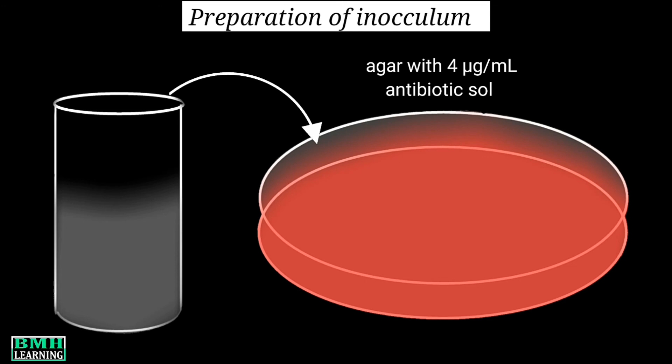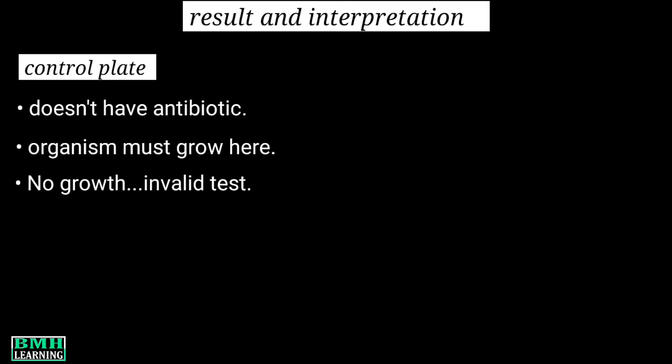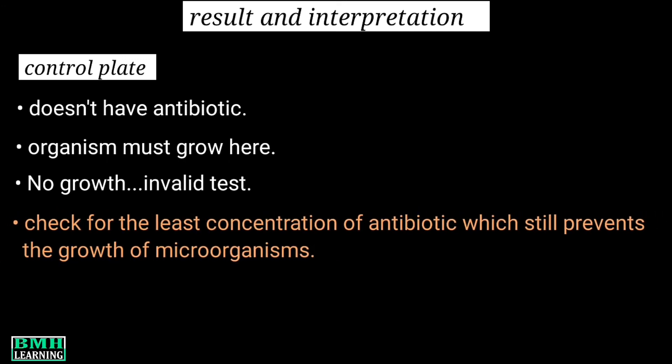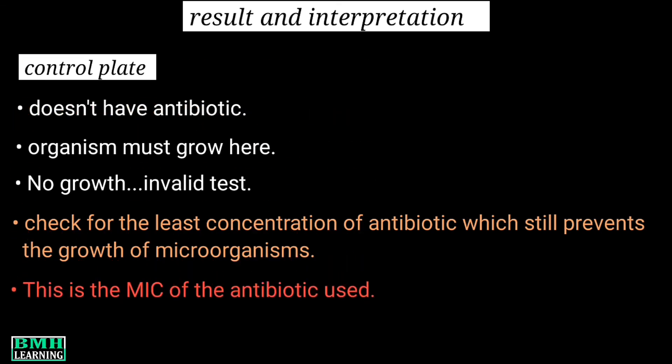We repeat the same procedure for each different antibiotic concentration. The spots are allowed to dry before incubation. After this, the Petri plates are incubated at 37 degrees centigrade. For results and interpretation: first check the control plate, which contains no antibiotic — organisms must grow here; if they do not, the test is invalid. Then identify the lowest concentration of antibiotic that still prevents microbial growth — this is the MIC.